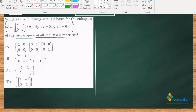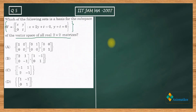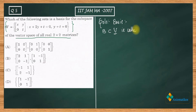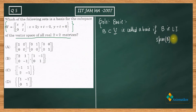Let us first understand what we mean by basis. A set B, a subset of a vector space V, is called a basis if: B is linearly independent, as well as the span of B equals V — the linear span of B is equal to V.